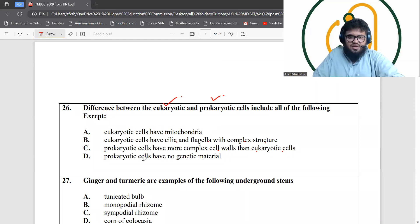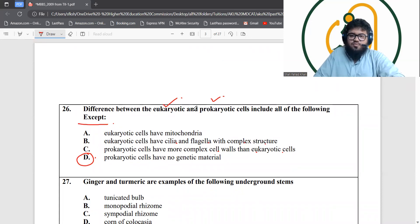Yes, definitely bacteria have gram-negative and gram-positive cell walls. The gram-negative cell walls are much more complex than gram-positive ones. Prokaryotic cells have no genetic material - this is the only wrong answer. This is a tricky question. They say that the differences between eukaryotic and prokaryotic are all of these except for this one, so it's actually this one that is completely wrong.